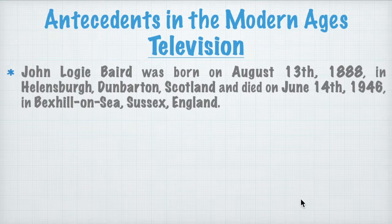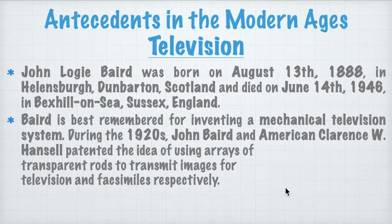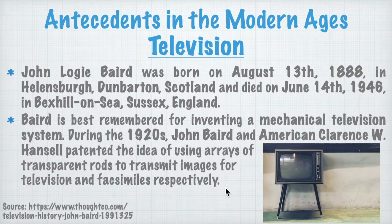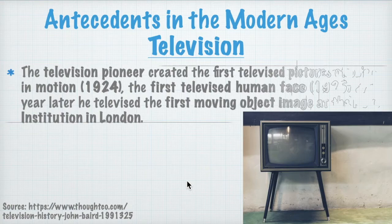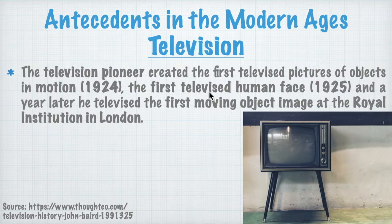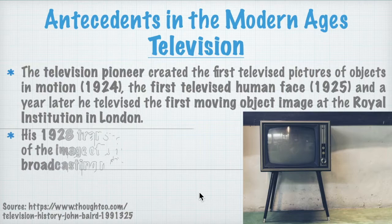Baird is best remembered for inventing the mechanical television system. During the 1920s, John Baird and American Clarence W. Hansel patented the idea of using arrays of transparent rods to transmit images for television and facsimiles, respectively. Baird created the first television pictures of objects in motion in 1924, the first televised human face in 1925, and a year later he televised the first moving image at the Royal Institution in London. His 1928 transatlantic transmission of a human face was a broadcasting milestone.